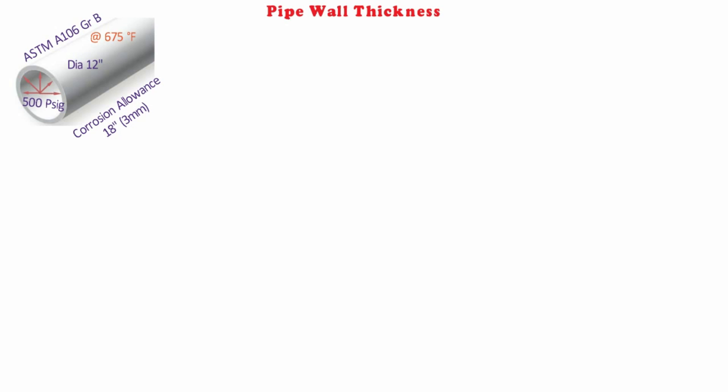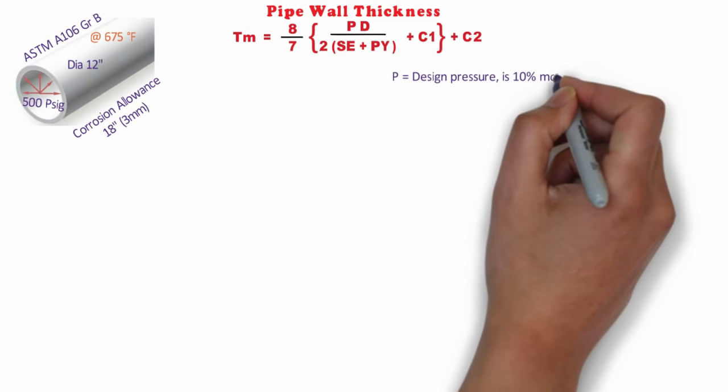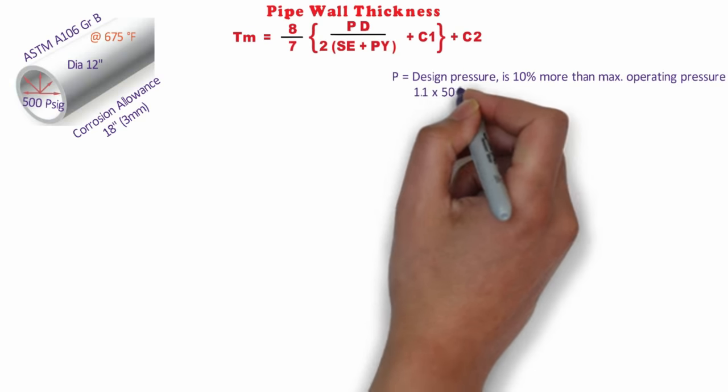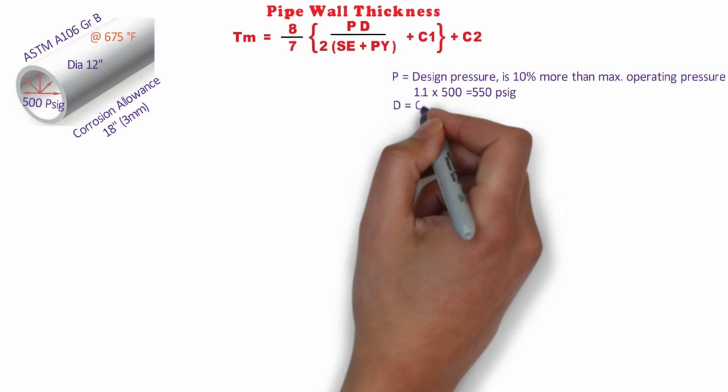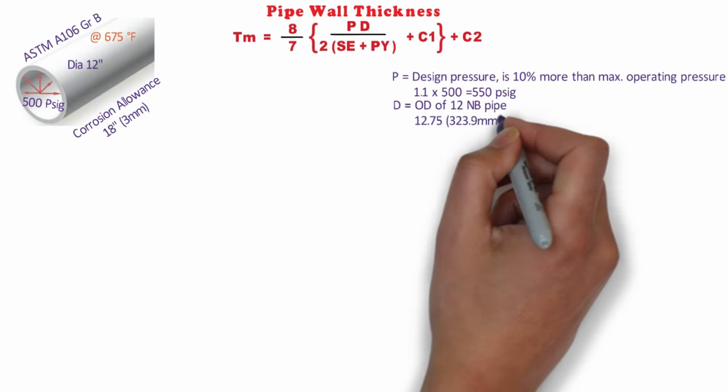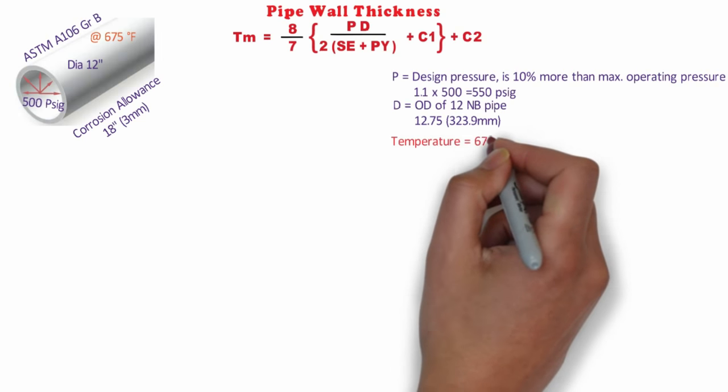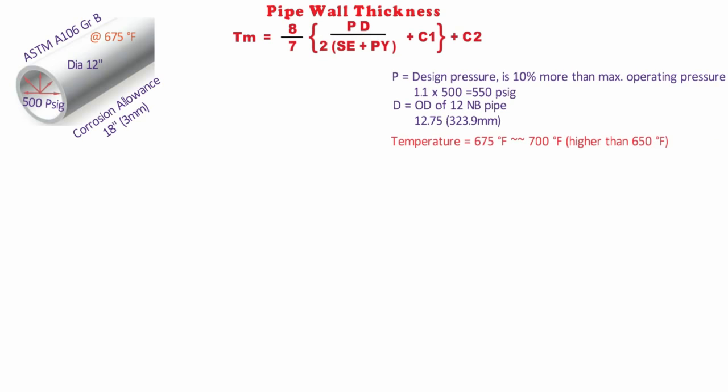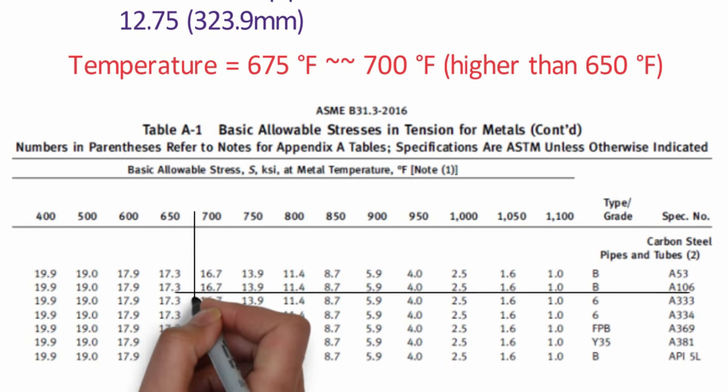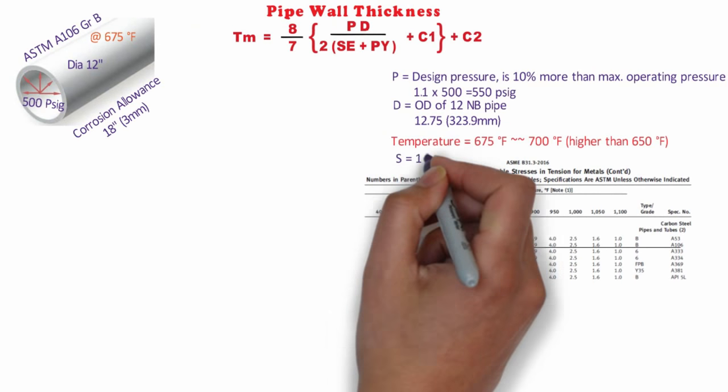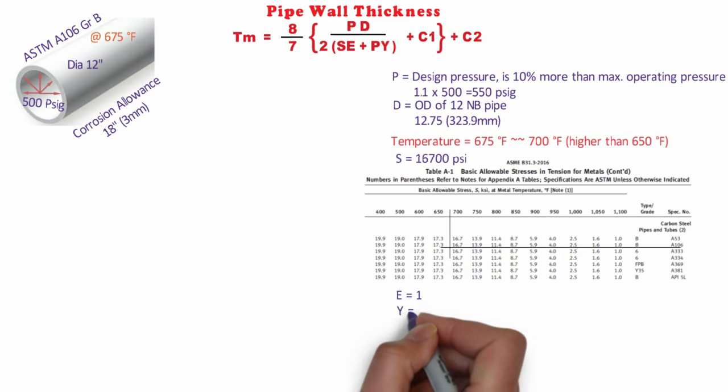Without wasting any time, we are going to directly use the formula. For P, let's suppose the design pressure is 10 percent more than maximum operating pressure, so P = 1.1 × 500 = 550 psig. D is 12.75 inches (OD of 12 NB pipe is 323.9 mm). Since temperature is more than 650°F, we consider the next higher value of 700°F. Accordingly, allowable stress from the table for ASTM A106 Grade B at 700°F, S = 16,700 psi. E = 1, Y = 0.4.